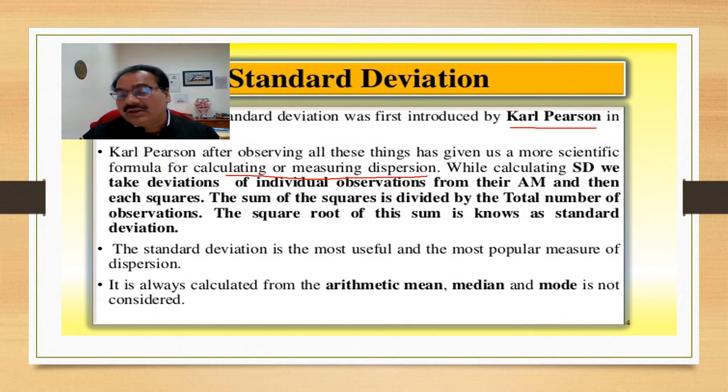While calculating standard deviation, we take deviations of individual observations from their arithmetic mean and then square each. The sum of the squares is divided by the total number of observations. The square root of this sum is known as standard deviation. In two lines, this is the general definition of standard deviation.